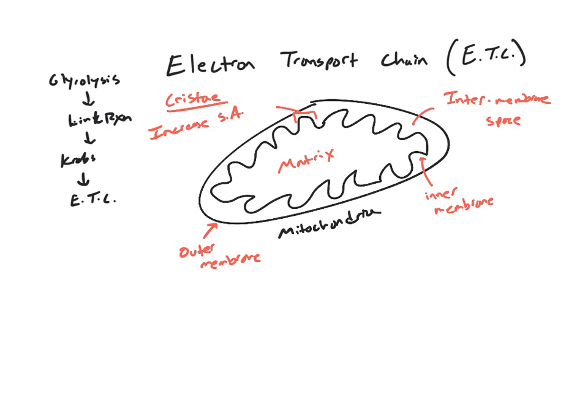And they help to increase the surface area. The cristae help to increase the surface area because where the electron transport chain takes place is in or on, involves the inner membrane. So the more inner membrane there is, the more space there is for this process to take place.